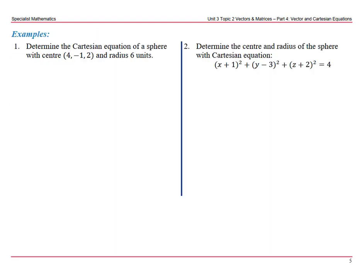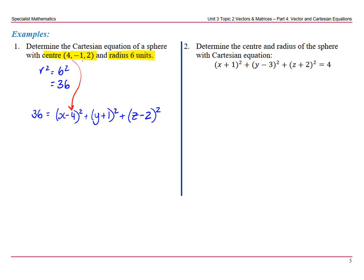Firstly, determine the Cartesian equation of a sphere with centre (4, −1, 2) and radius 6 units. So our r squared is going to be 6 squared, which is 36. So we have 36 equals x minus 4 all squared, plus y minus (−1), which is y plus 1 all squared, plus z minus 2 all squared. We're just putting each of those points into our equation.